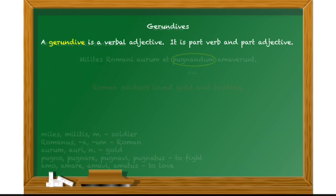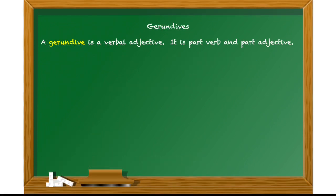Now the second part of speech is related — it certainly has a related name. They are the gerundives. A gerundive is a verbal adjective: it's part verb and part adjective. So where a gerund is part verb, part noun, a gerundive is part verb, part adjective. A good way to remember that is that the gerundive is an adjective.